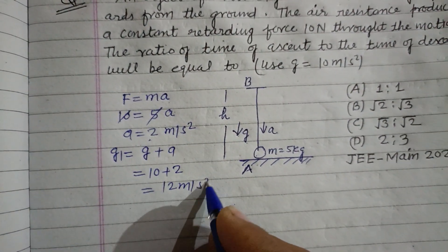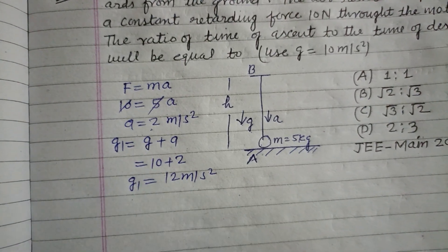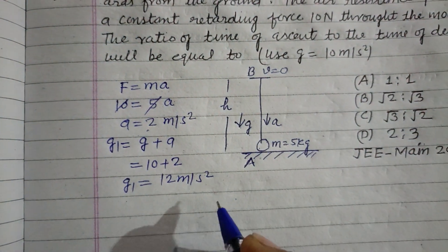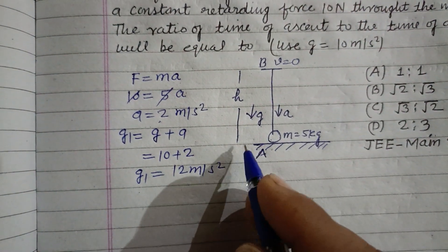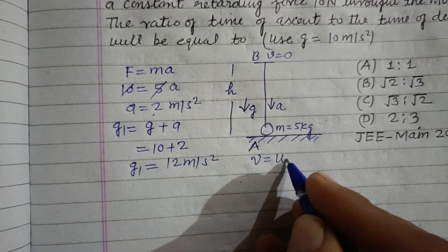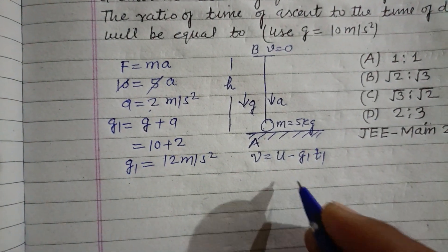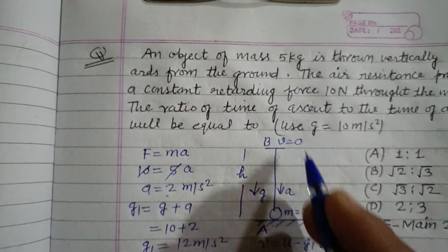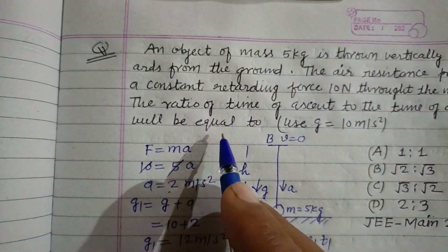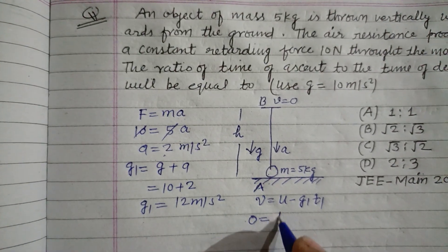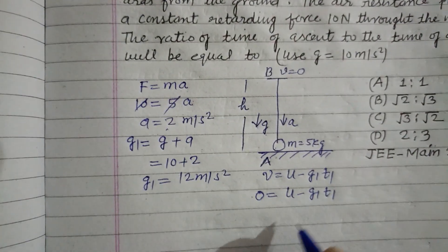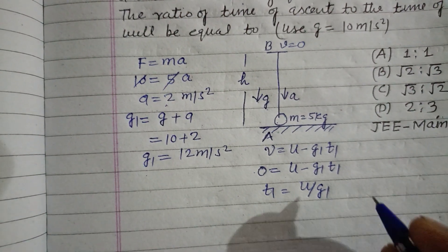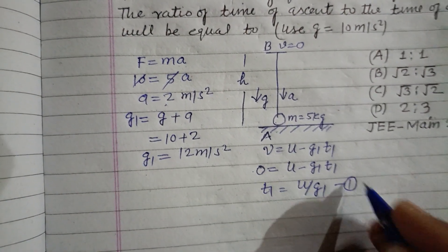This is the retarding force which is decreasing the velocity of the body. At the highest point, its velocity becomes zero. So time of ascent is v equals u minus g1 times t1. So v is finally zero, therefore t1 equals u upon g1. This is our first equation.